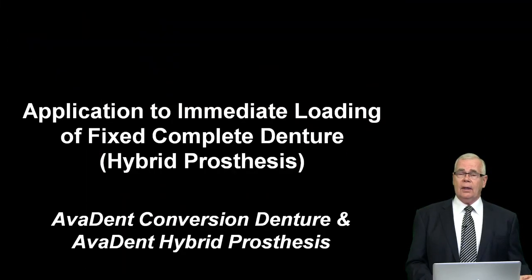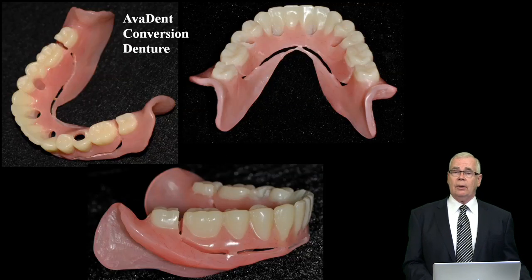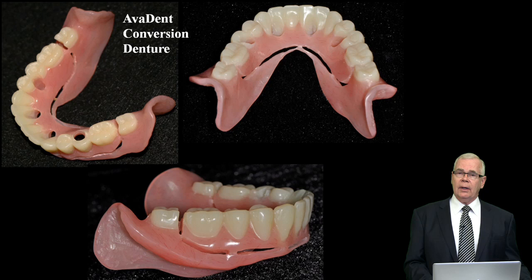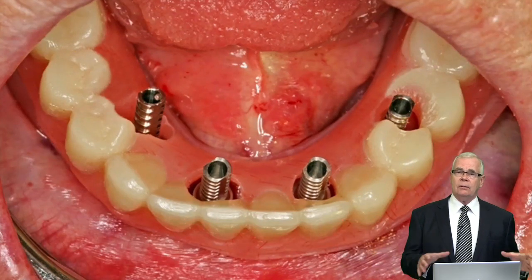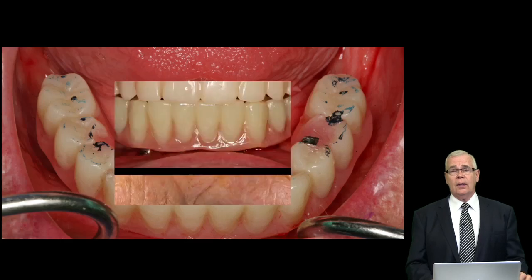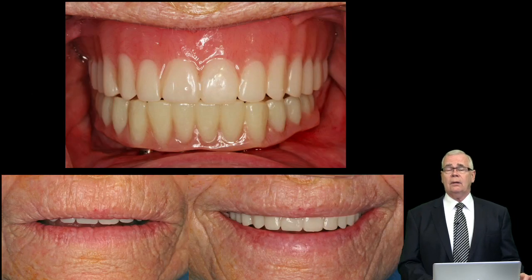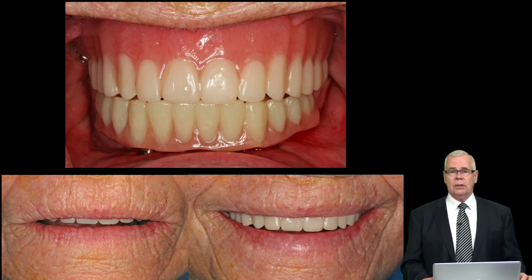A very exciting adaptation of this process is for the immediate loading of a complete arch fixed prosthesis. You have a denture fabricated with channels already positioned in it, so by the time the implants are placed in the mouth, the denture can be positioned over top. This can be a very accurate way of getting a patient quickly into a nice conversion prosthesis after implant placement.